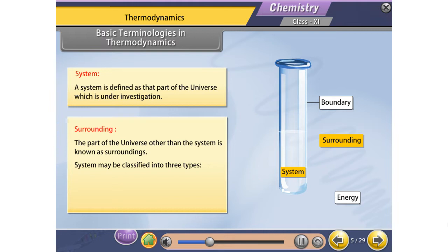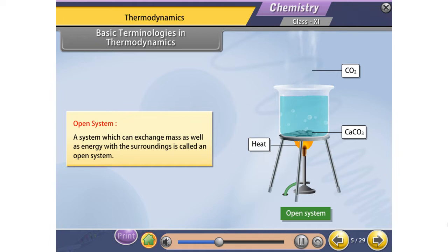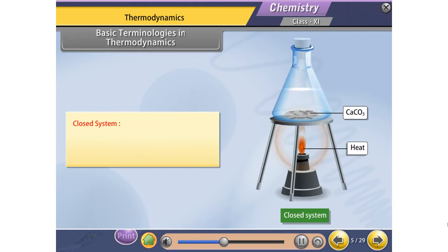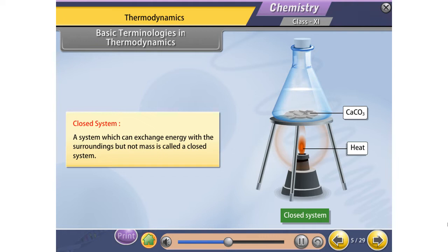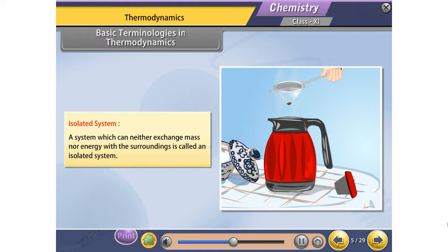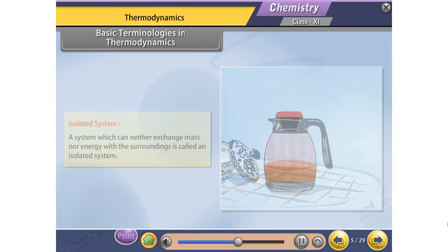A system may be classified into three types: open system, closed system, and isolated system. An open system is one which can exchange mass as well as energy with the surroundings. A closed system can exchange energy with the surroundings but not mass. An isolated system can neither exchange mass nor energy with the surroundings.